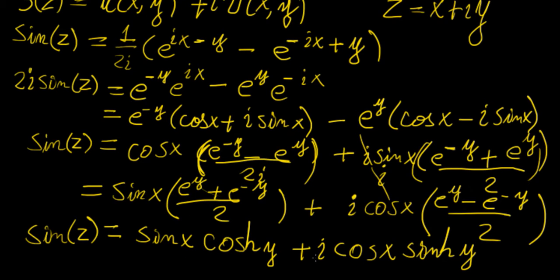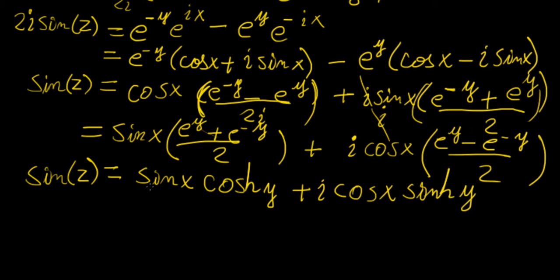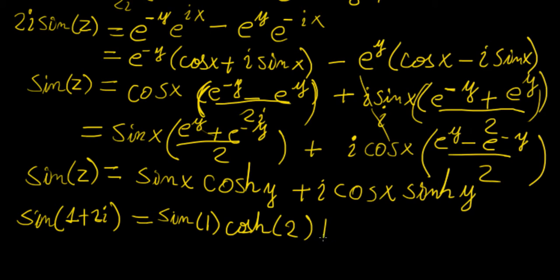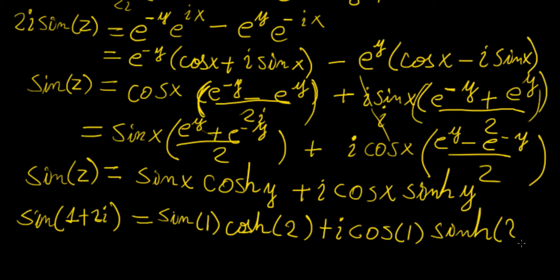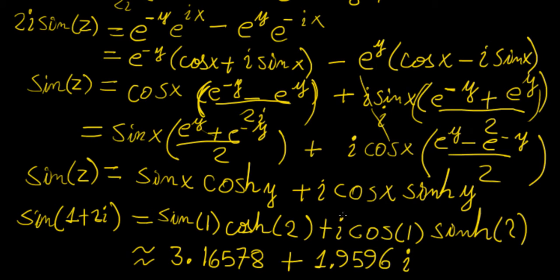So sin(z) = sin(x)·cosh(y) + i·cos(x)·sinh(y). The real part u(x,y) and imaginary part v(x,y) are both functions of x and y. For example, sin(1 + 2i): plug x = 1 and y = 2 to get sin(1)·cosh(2) + i·cos(1)·sinh(2), which is approximately 3.16578 + 1.9596i. Remember to use radians.